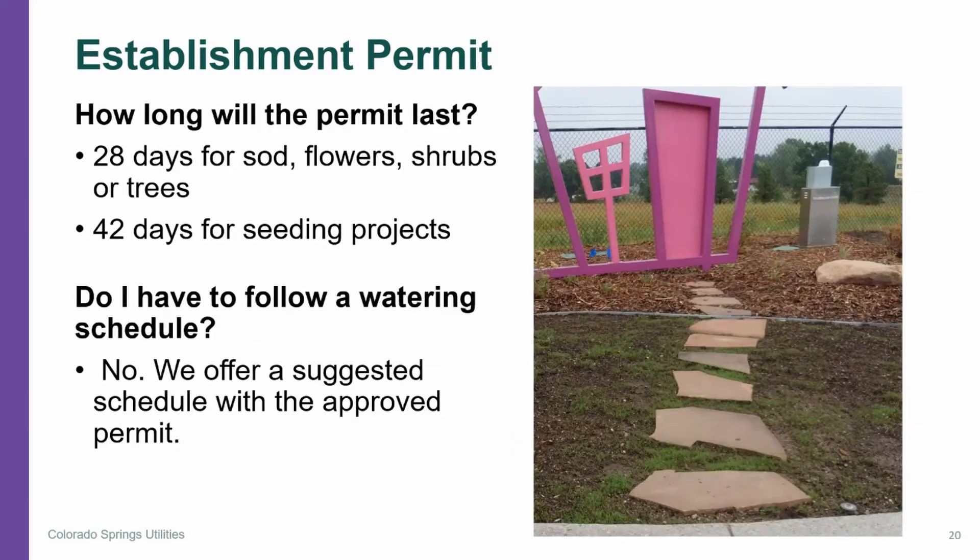How long will the permit last? A permit is valid for 28 days for sod, flowers, shrubs, and trees, and 42 days for seeding projects.